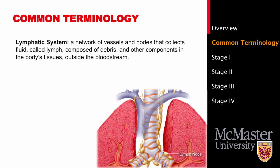Lymph carries things such as debris, fats, and white blood cells, and is separate from your bloodstream. Metastasis is the spread of cancer from a primary area to another. Cancerous cells can travel through the lymph, where they can create tumors in lymph nodes.